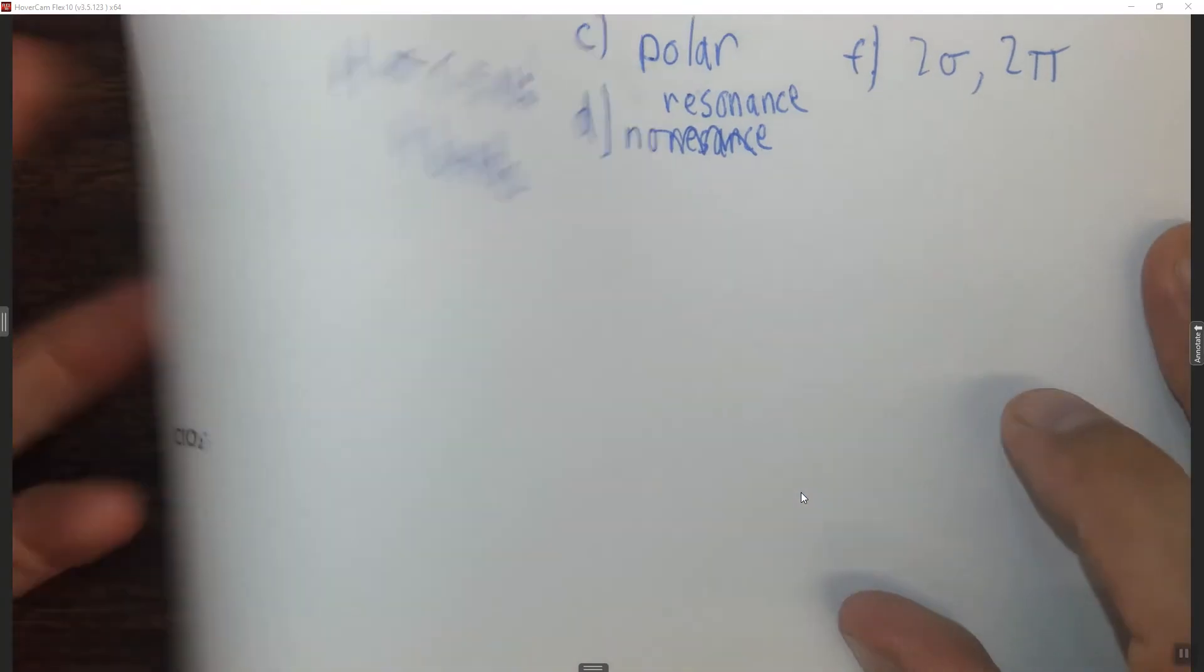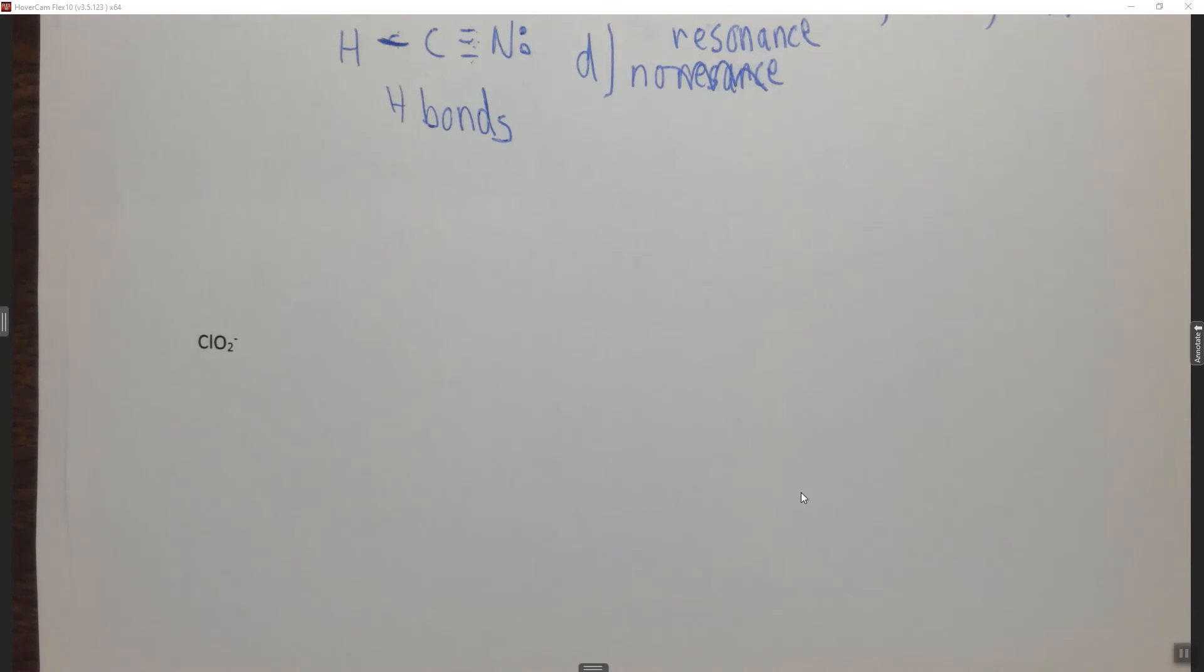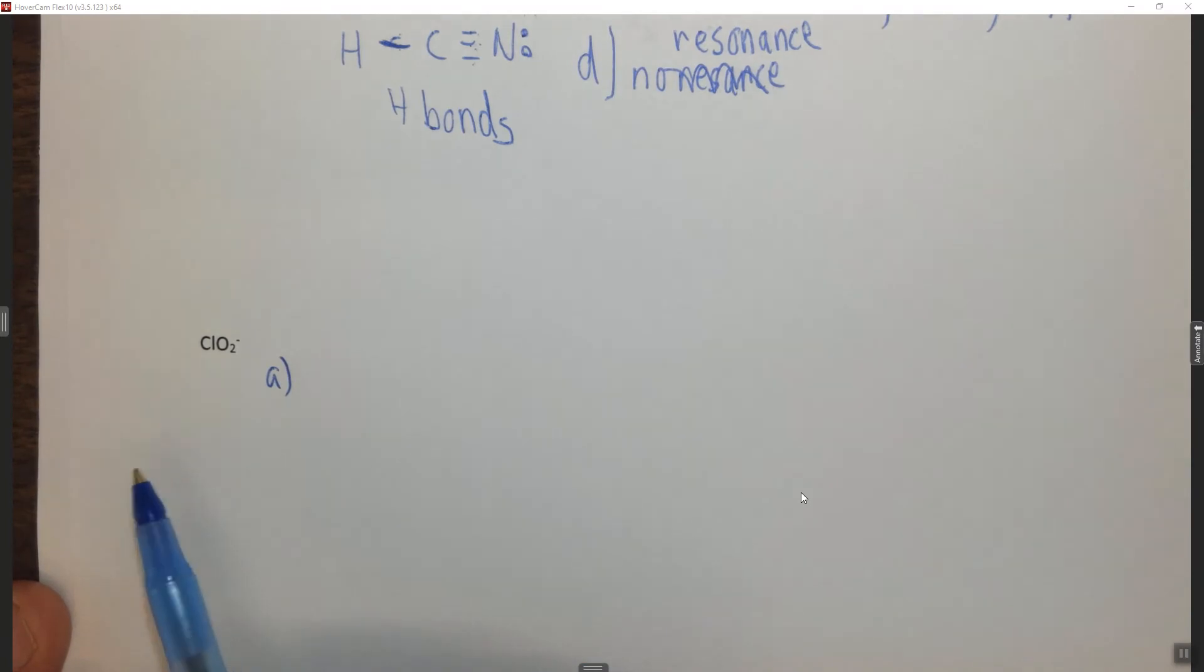Alright, so now we're going to do the same thing for ClO2 minus. Again, in case you're just watching this part of the video, this is super abbreviated. You do need to look at chapter seven and chapter eight Lewis structure problems in order to get some more details here.